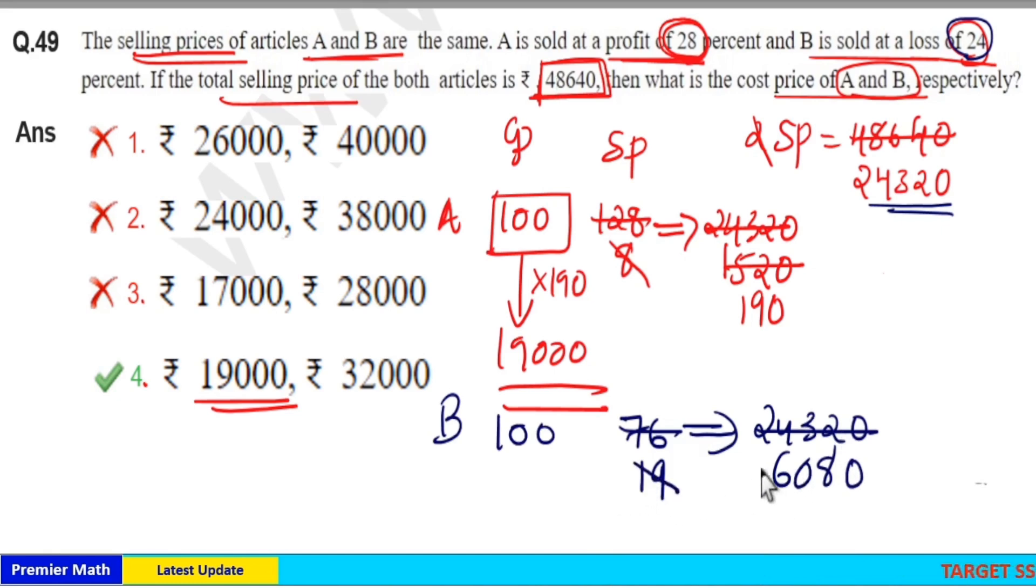20 into 3 is 60. So 19 goes 3 times in 60, remaining 3, 19 goes 2 times in 38, remaining 0. So 1 part is equal to 320, means here 100 part is the cost price of B which is 100 into 320, 32,000.